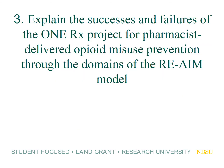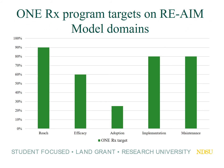That was an introduction to the RE-AIM model and how it's used to determine population health outcomes. The final part of this presentation explains the successes and failures of 1Rx through the RE-AIM domains. Here are our targets in table form: we expected pharmacies to reach 90 percent of eligible patients; 60 percent of those found to be at risk would receive the various services; 25 percent of all pharmacies in the state would adopt the program; 80 percent of those who adopted would go on to implement it; and 80 percent of those would also go on to maintain it over time.